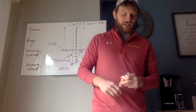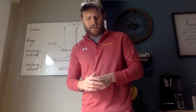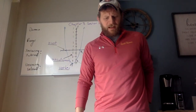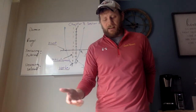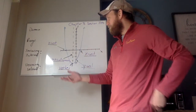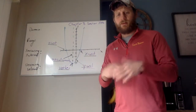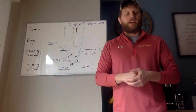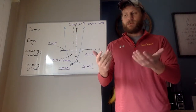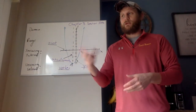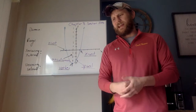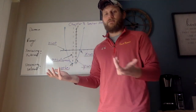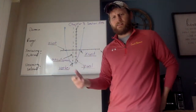Now let's go over domain, range, increasing interval, and decreasing interval. Domain is your x-values. For quadratics, it's pretty simple — my x-values can be pretty much anything. The only time you'll have restrictions on your domain is when you're dividing by zero or taking the square root of a negative number, but I don't have any of those here — no holes in my graph.